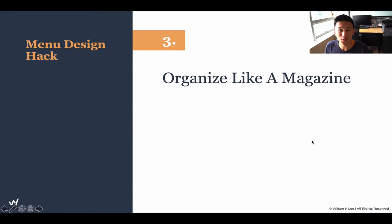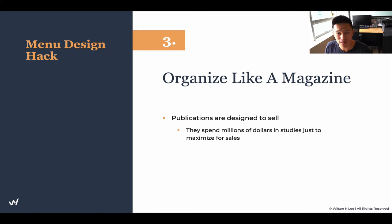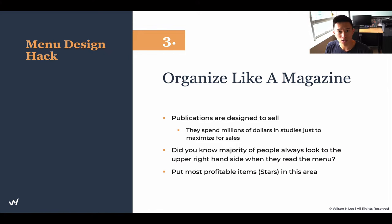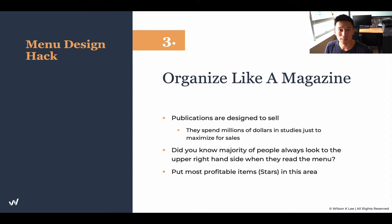Menu hack three: organize your menu like a magazine. Magazines are designed to sell, and people spend millions of dollars designing them. Did you know that a lot of people look at the top right of the menu first before they read anything else? That's the first thing that catches their eye. That's why that real estate is super valuable. You should be putting all your stars — your highly profitable, highly popular items — in the top right-hand side of your menu to maximize orders for those items.